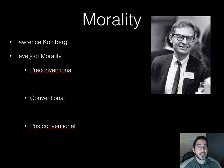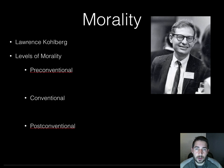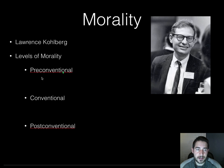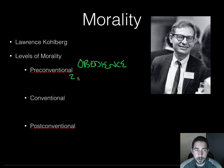As we move on in adolescence, we develop these stages of morality. Lawrence Kohlberg has three levels of morality with six stages — each level has two stages. The first level is pre-conventional. Stage one is called obedience, and stage two is self-interest.